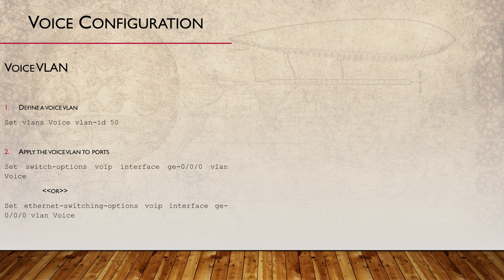What if we're connecting a phone to a switch port? There are three parts: we need a voice VLAN, power over ethernet, and LLDP. Step one is to define a VLAN for voice — exactly the same as before. Step two is to assign it to one or more interfaces. This is not configured on the interface itself; instead it's under Switch Options VoIP, or Ethernet Switching Options VoIP, depending on whether you have a newer or older switch. We're mapping a switch port to a VLAN for voice usage, while still keeping a data VLAN on the interface.